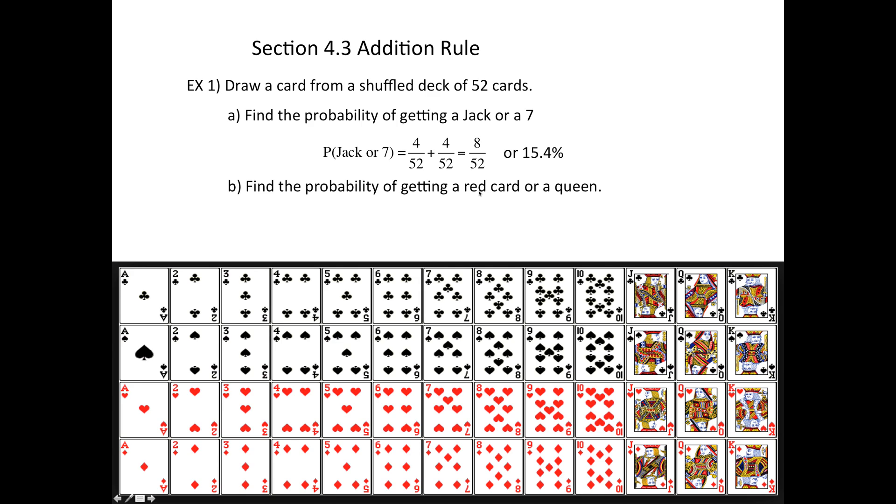Next is one where it's possible the two things could happen. Red cards—that's half of the deck, 26. Then the Queens—there's 4 Queens. But these two red Queens just got counted twice, so then what I need to do is subtract the two red Queens that got double counted. So in total that's 28 out of 52, or 53.8 percent.